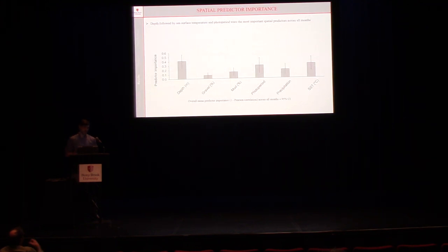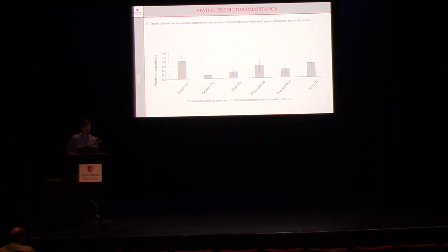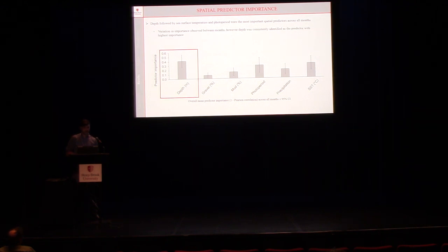Looking at spatial predictor importance for these models, this makes biological sense. For Atlantic Sturgeon, which is a near-coastal species, depth shows up as the most important predictor. You also see other predictors such as photoperiod and sea surface temperature showing up as important — ones we know are really important for how they're making spawning migrations and transitions.